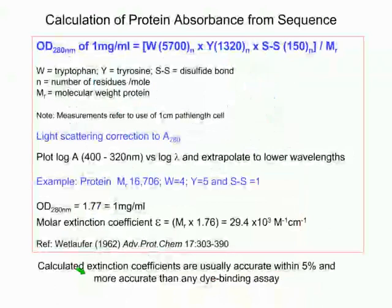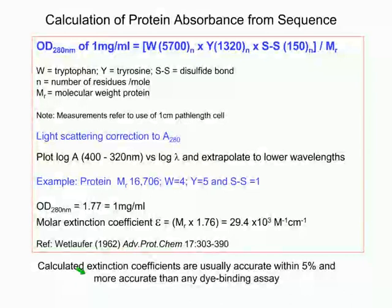For a purified recombinant protein whose sequence we know, we can calculate the protein absorbance and molar extinction coefficient from the tryptophan, tyrosine, and disulfide content using empirical equations. Chapter 3 of Current Protocols has a more extensive article on this calculation. We do need to correct for light scattering, and these absorbance-derived values are accurate to within 5% of values determined by quantitative amino acid analysis—certainly more accurate than dye binding assays.